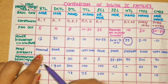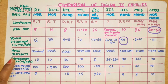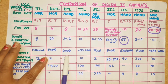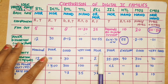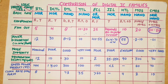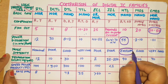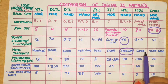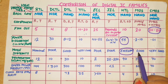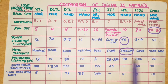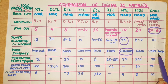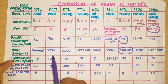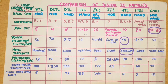Now noise immunity. RTL is nominal, DCTL is poor, DTL is good, TTL is very good, and ECL is also poor. HTL has excellent noise immunity — H stands for high, meaning highest noise immunity. NMOS is good and CMOS is very good. So the best noise immunity is HTL, followed by TTL and CMOS which are very good. DCTL and ECL have very poor noise immunity.